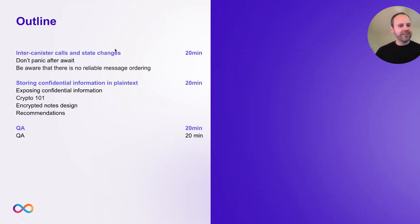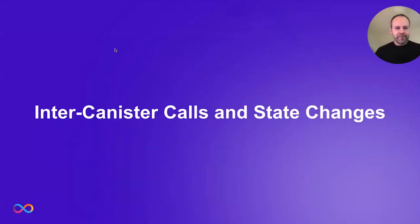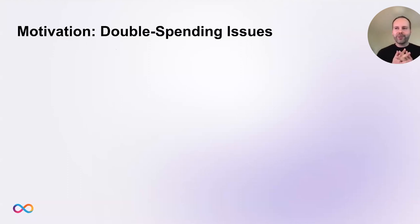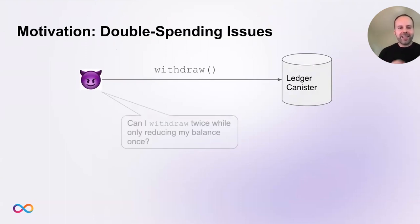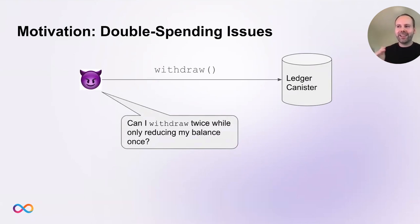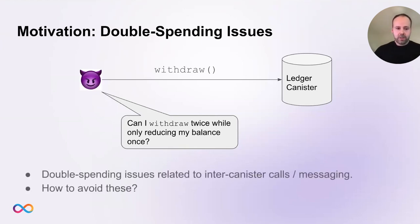Let's dive into the first part on inter-canister calls and state changes. The motivation behind this is double spending issues that can arise in this context. Let's say we have a ledger canister, and an attacker wants to withdraw funds but tries to withdraw twice while only reducing their balance once — getting double the money while only reducing the balance once. This is a typical double spending issue that could arise in the context of inter-canister calls and the messaging mechanism on the Internet Computer.